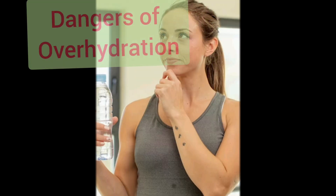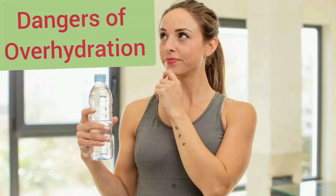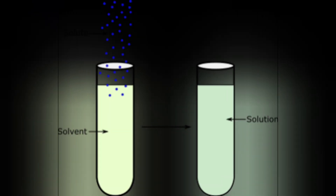First of all, we need to discuss why overhydration is dangerous. Overhydration can be dangerous because it changes the balance of chemicals in your body. Your cells contain solutes, which are substances that dissolve in liquid, and these solutes carry out important functions. Your cells need them in the right concentration to maintain your health.